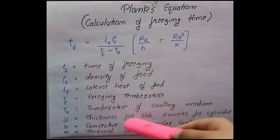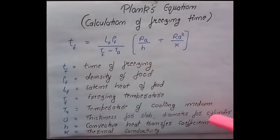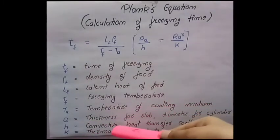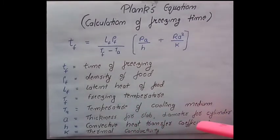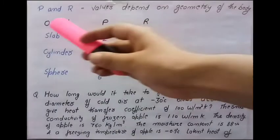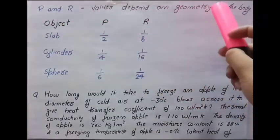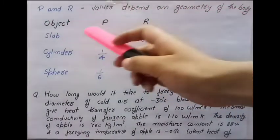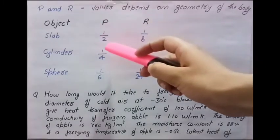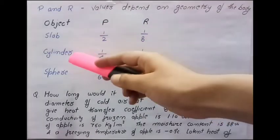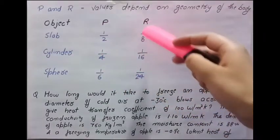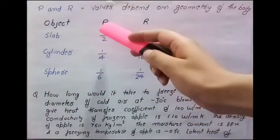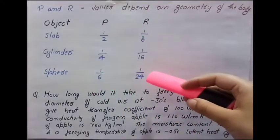Now A is the thickness for slab and diameter for cylinder and sphere. H is convective heat transfer coefficient and K is thermal conductivity. The value of P and R depend on geometry of the body. For slab P is 1/2 and R is 1/8. For cylinder P is 1/4, R is 1/16, and for sphere P is 1/6 and R is 1/24.